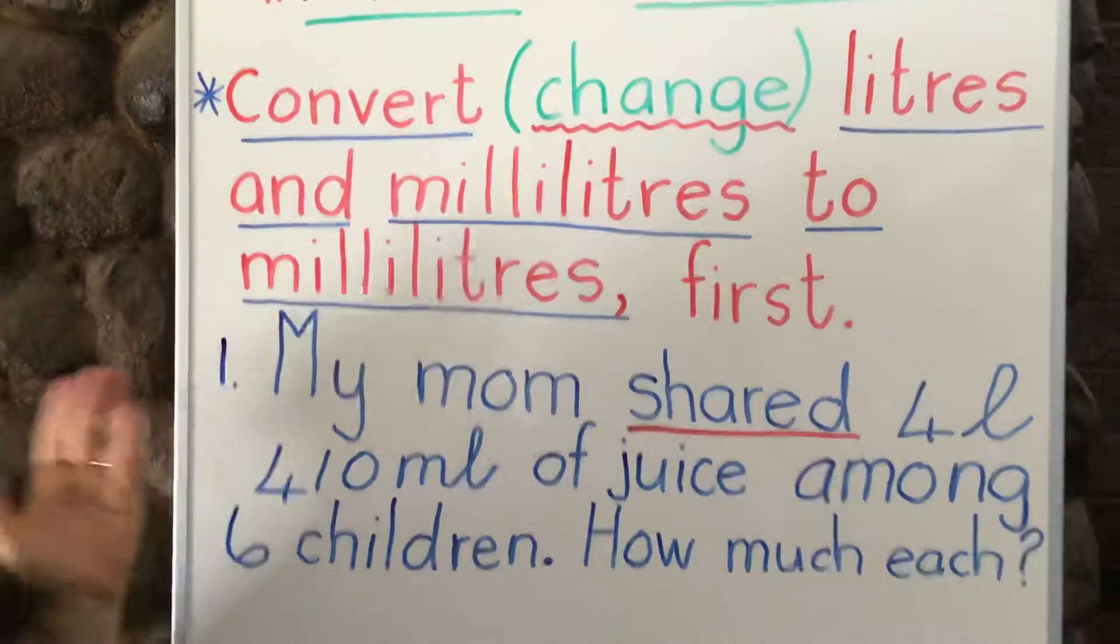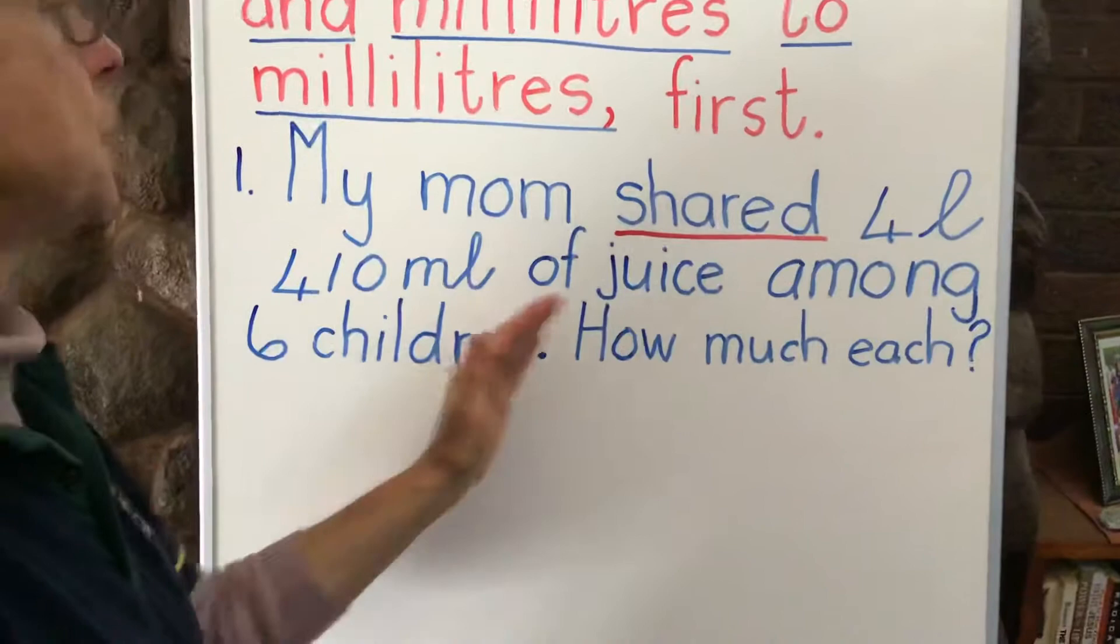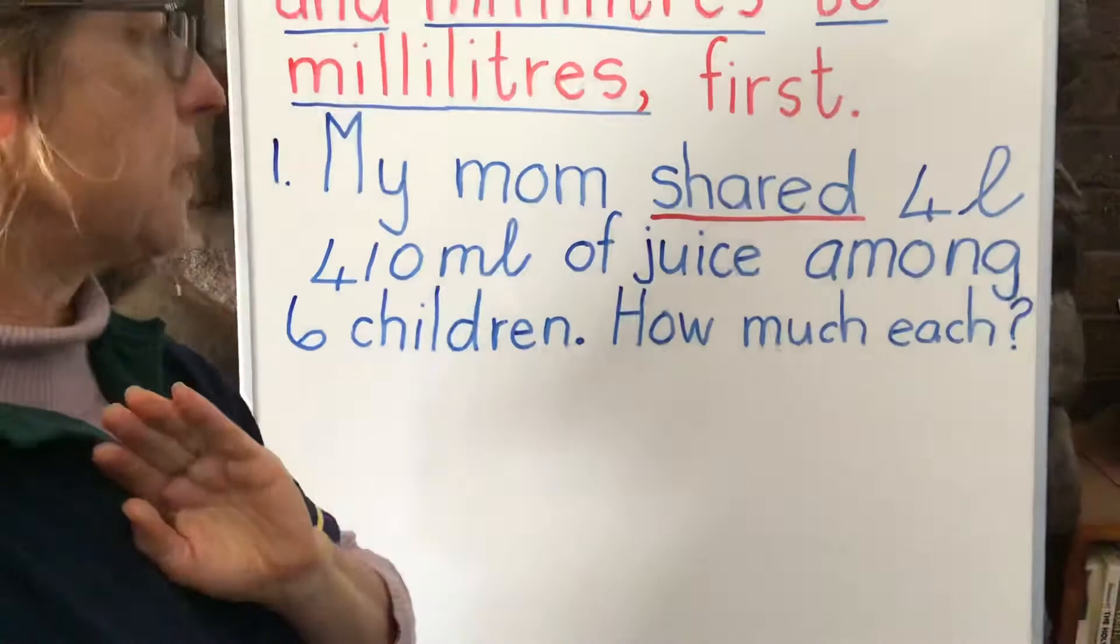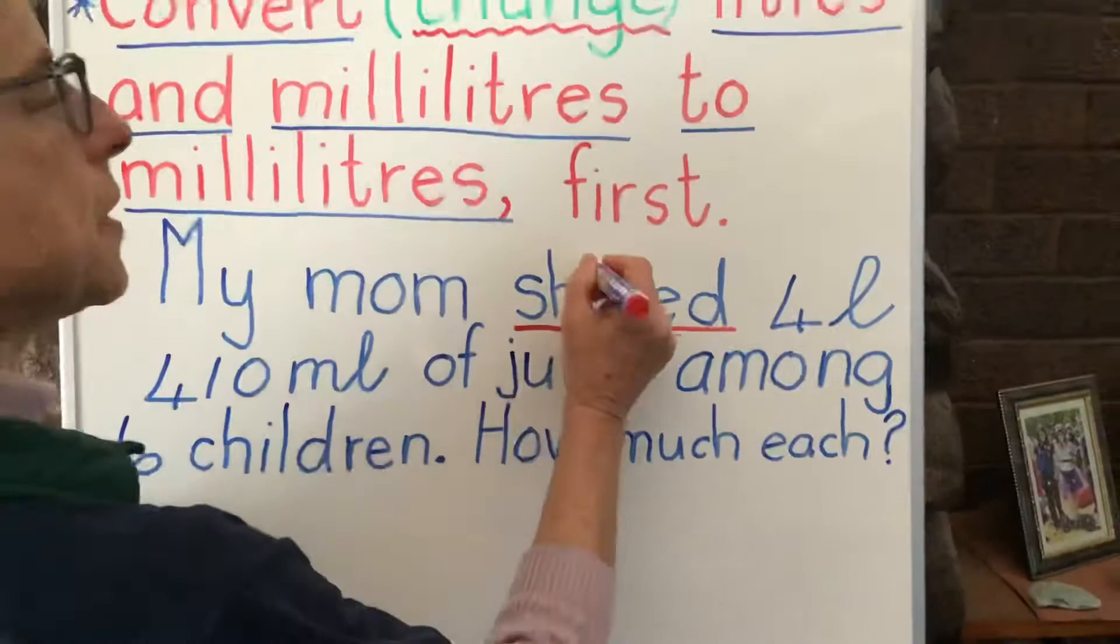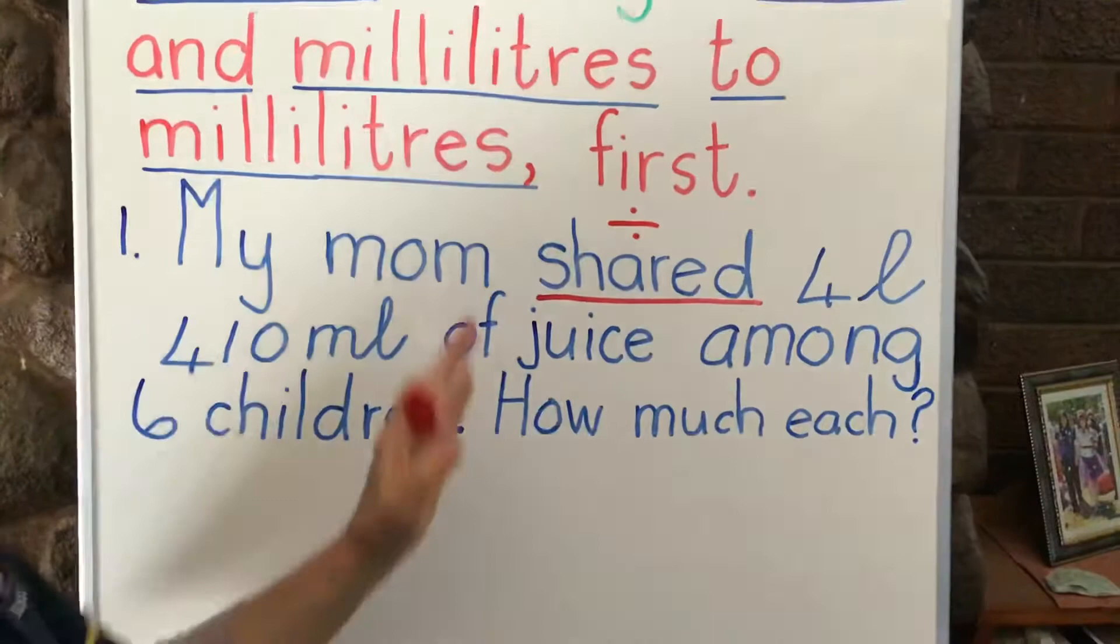My mom shared four liters, 410 milliliters of juice among six children. How much did they each get? Now this word 'shared' gives you a big clue because the sharing sign is the division sign. That's right, so we're going to use the division sign.